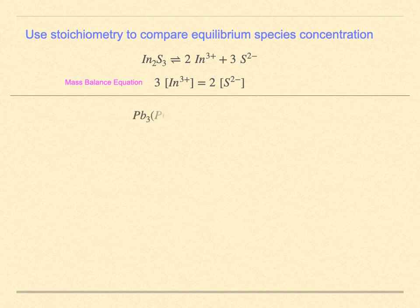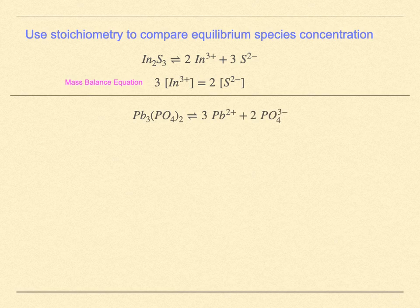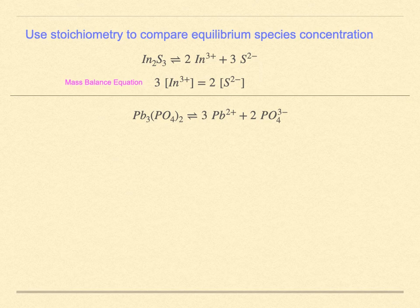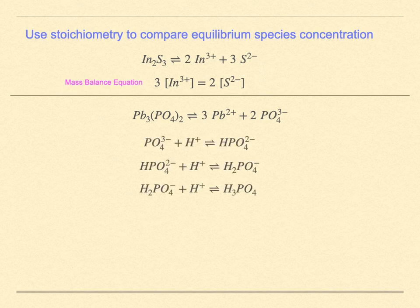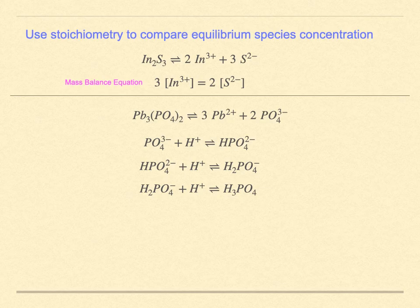Here is another example along similar lines. Consider lead phosphate. You put it in as lead phosphate. This might seem like the indium sulfide problem, but the additional complication lies with the phosphate. It will further react with water to form the various additional forms all the way up to phosphoric acid.